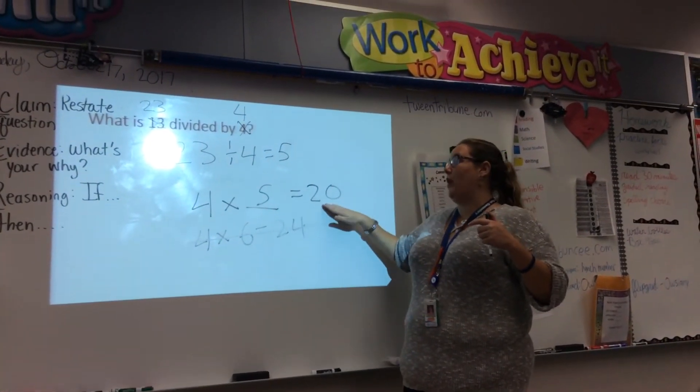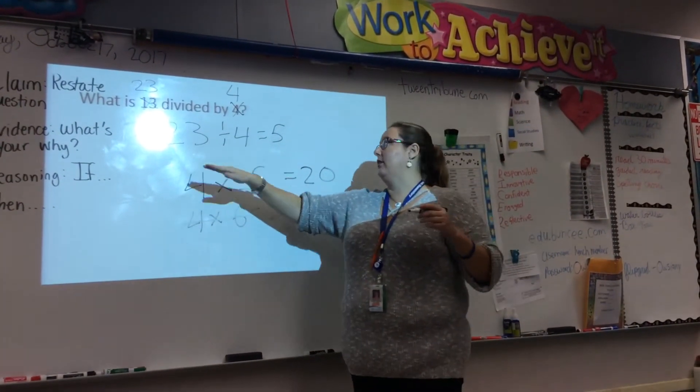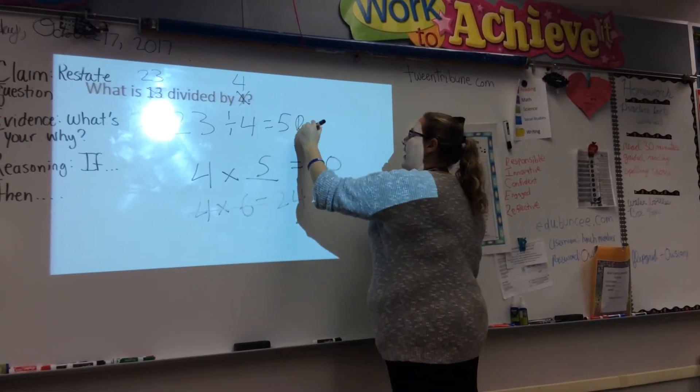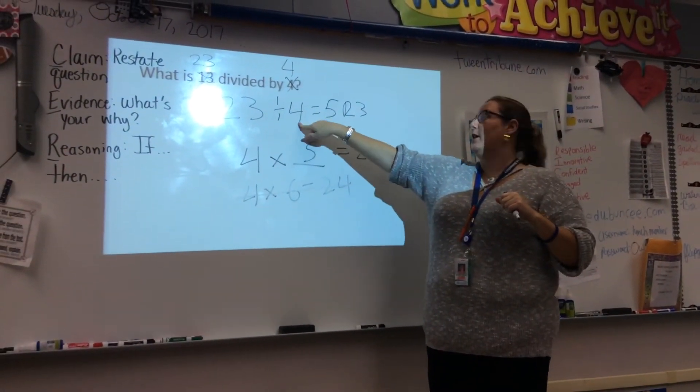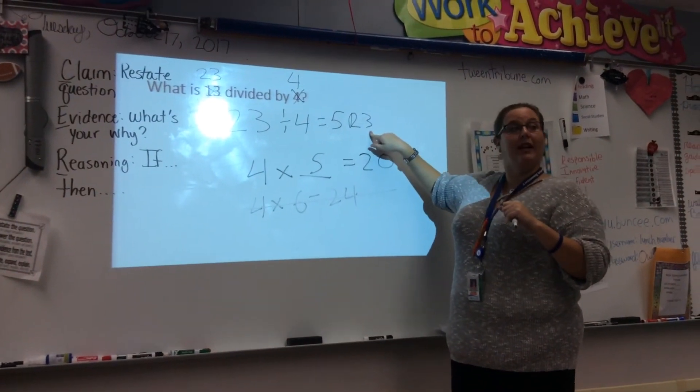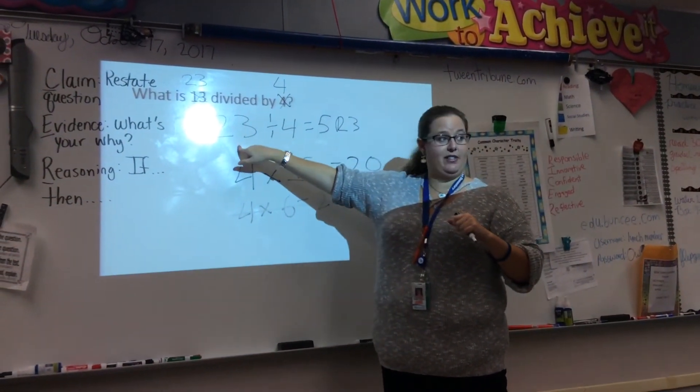I did 4 times 5 and I got 20, so what is my remainder? 3. I can double check because I can do 5 times 4 is 20, plus 3 in my little remainder buddy. And that is 23.